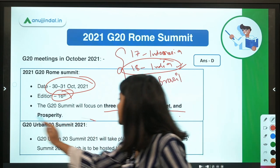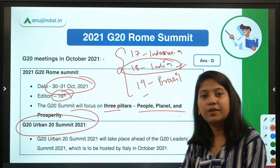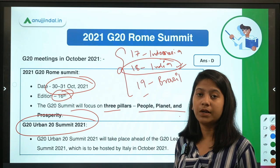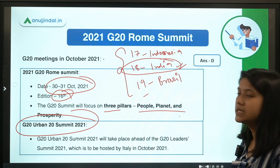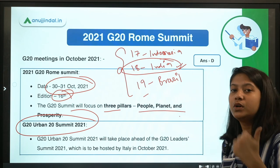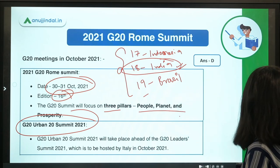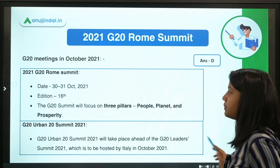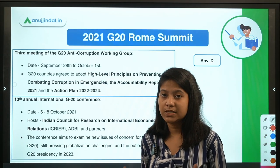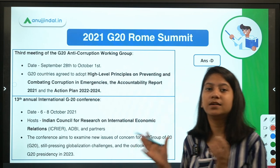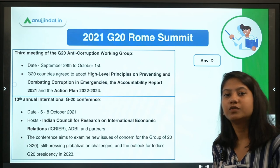The three pillars — People, Planet and Prosperity — form the theme of the G20 Urban 20 Summit as well. This summit will take place in October, though dates are not yet confirmed, and it will take place before the official G20 summit. Now let's have a look at the G20 ministerial-level meetings that have taken place this month.